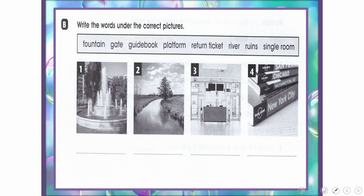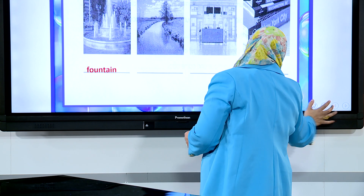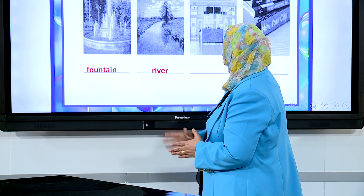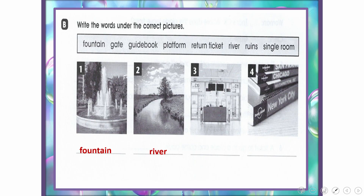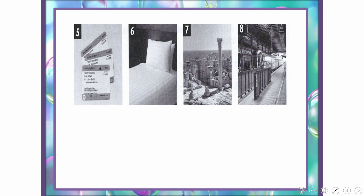Picture 1: fountain. Picture 2: river. Picture 3: gate. Picture 4: guidebook. Picture 5: return ticket. Picture 6: single room. Picture 7: ruins. Picture 8: platform.